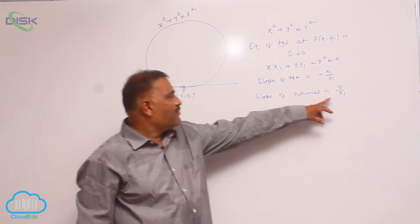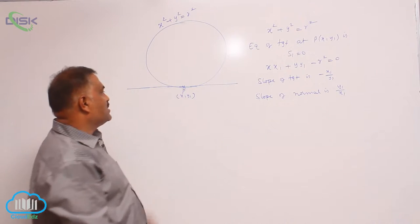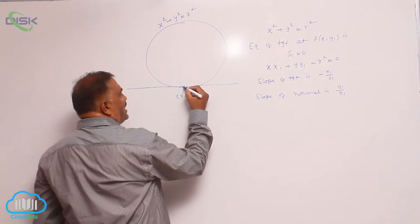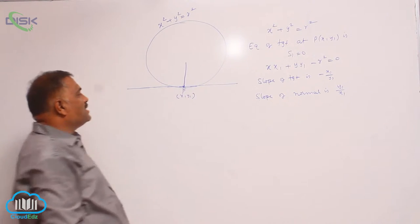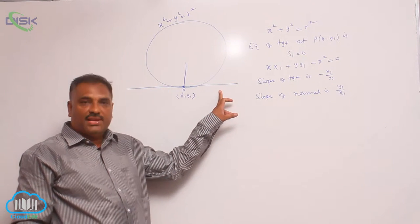You observe that slope of normal is given, point is also given. Normal definition is a line passing through the point of contact and perpendicular to the tangent.